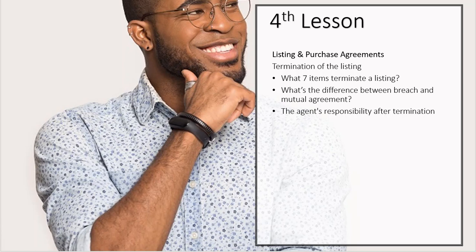A mutual agreement literally has to be mutual between the parties and is typically not based on a violation of the rules. For example, a seller might say they've decided to stay and want to remove the house from the MLS, and you agree. There is an actual document called the mutual release of listing that both parties sign voluntarily and acknowledge, which then goes into the file as a mutual release.